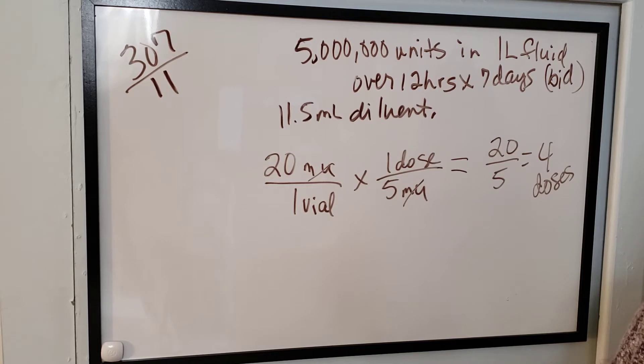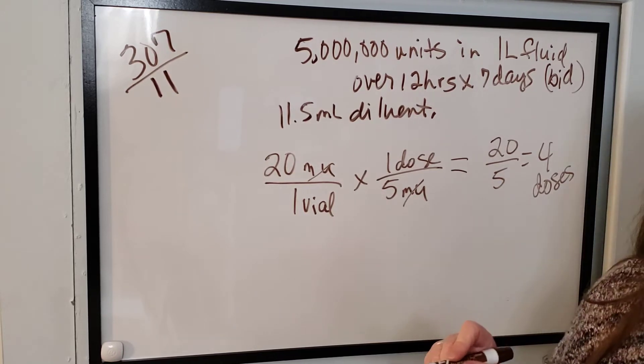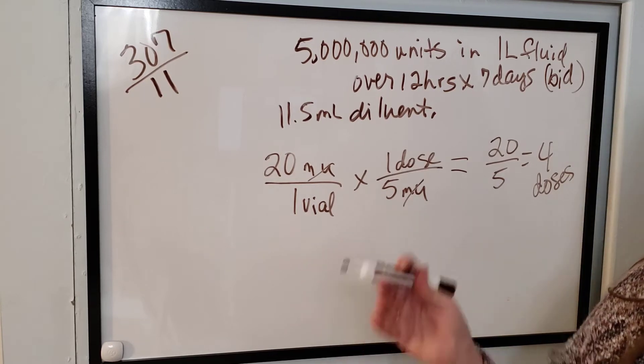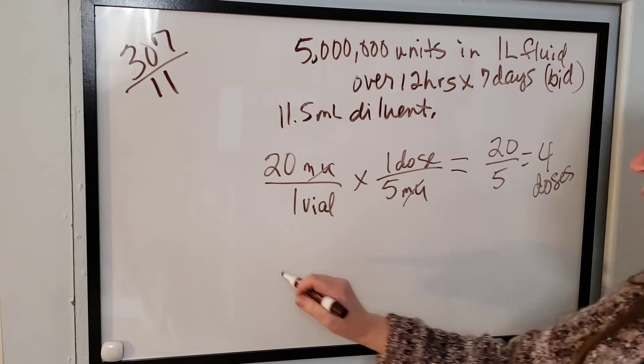Is that making sense? It's sort of like saying, I have 20 million dollars. If my house is 5 million dollars, how many houses can I buy? 20 divided by 5 is 4.